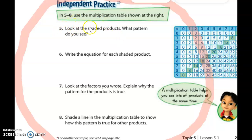So for number five, it says, look at the shaded products. What patterns do you see? Remember that products are the answers to multiplication problems. Everything in the white here is a product. It is an answer.